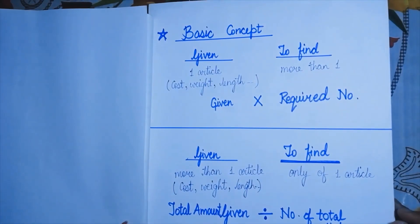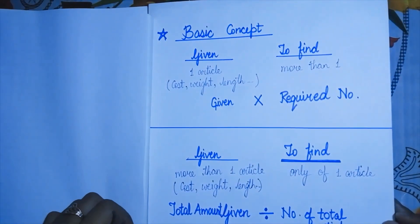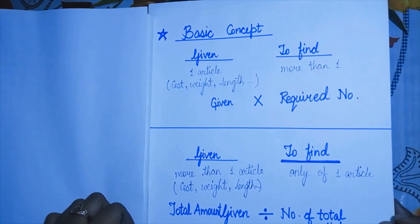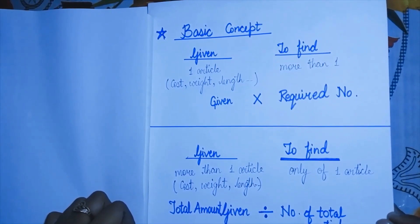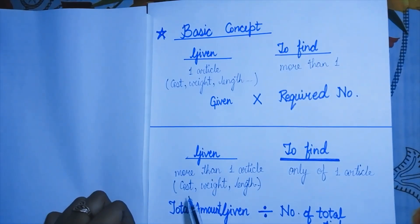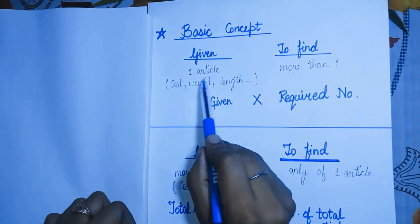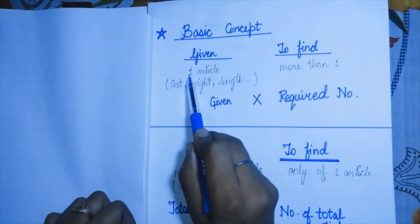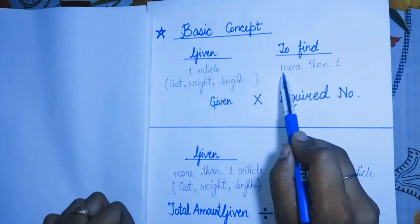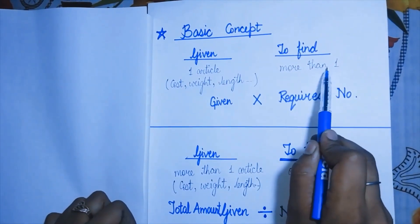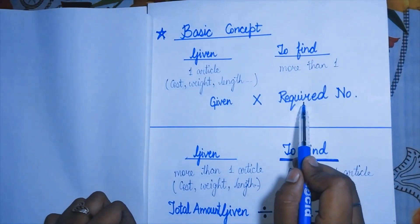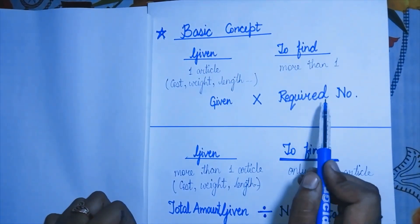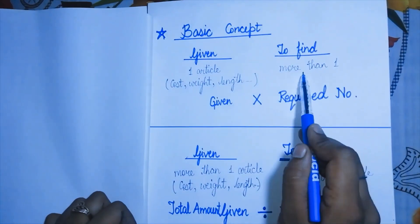Hi everyone, welcome to my channel Easy Tuition Classes. We have solved 3 exercises already; today we will solve the fourth exercise in chapter 1, which is related to word problems. First, we need to clear some basic concepts. We need to know the cost and length of an article. When we are given one article and need to find more than one, we multiply the given price, weight, or length by the required number of articles.